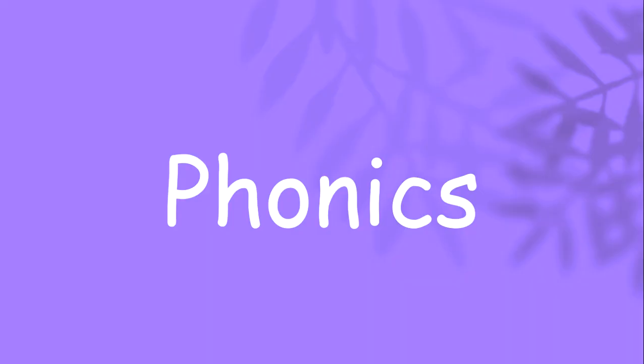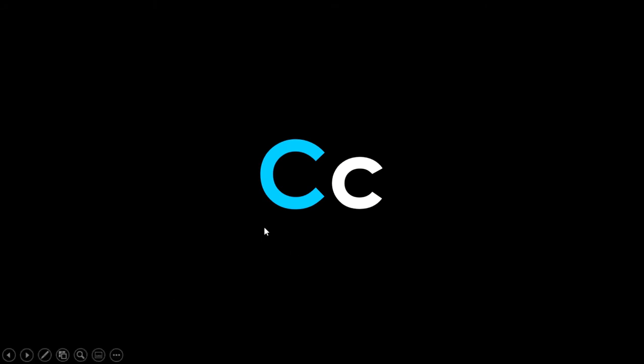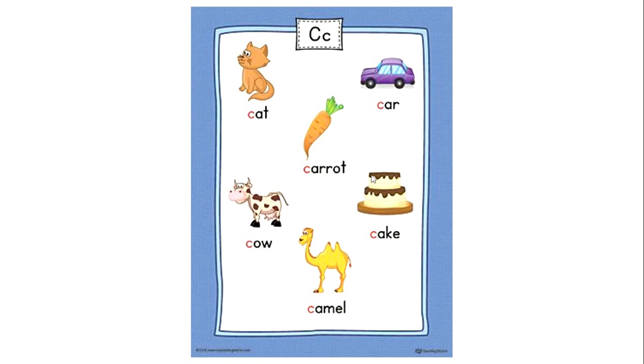Now let's move on to phonics. For phonics, we're going to be looking at our letter sounds again. So the first letter is C. The sound is K. This is capital C — I put the capital letters in blue for you to see, and the lowercase letters are in white. Now look at these words — all of these words have the K sound at their beginning. Pause the video here and give these words a try.